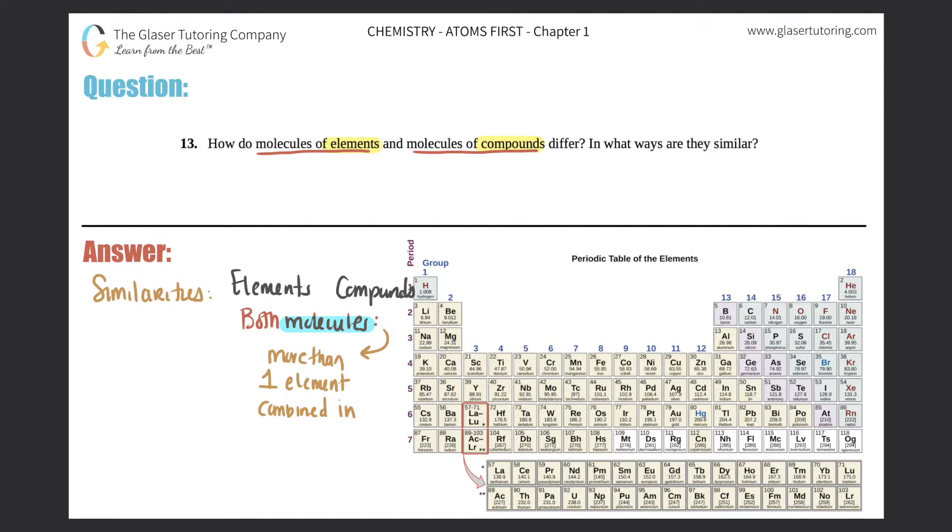...in a substance. And you know what, I'm going to actually make this a little bit better. I'm going to erase the word 'element' and say 'atom'—that would be more correct. So more than one atom combined in a substance. So what does that mean? Let's think of a molecule...